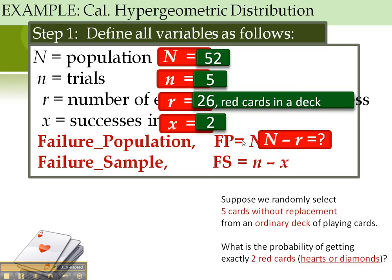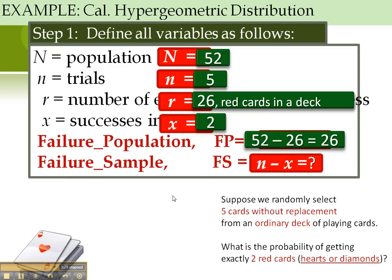Now, we go an extra step, and we calculate a failure population, which is the population minus its successes. And a failure sample, which is the trial minus the successes. Do you understand? I hope so.